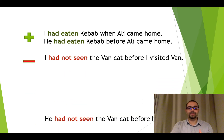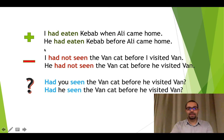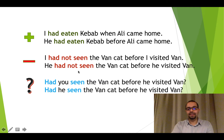Now let's look at the positive, negative, and question forms. Positive: 'I had eaten kebab when Ali came home.' Negative: 'I had not seen the Eiffel Tower before I visited one' — or 'He hadn't seen it before he visited.' Question: 'Had you seen it before you visited?' or 'Had you seen it before he visited?'